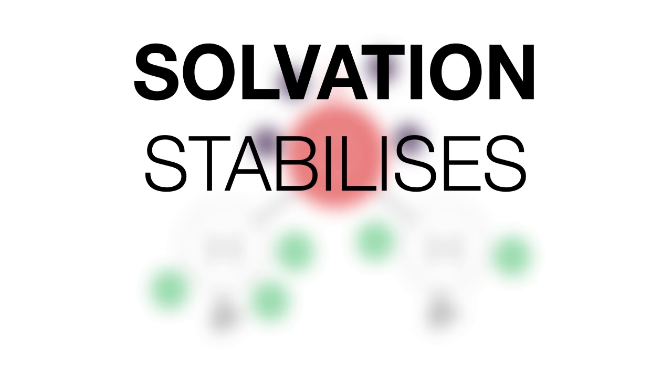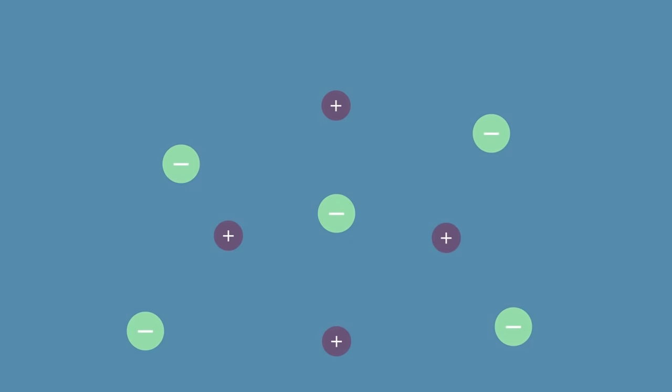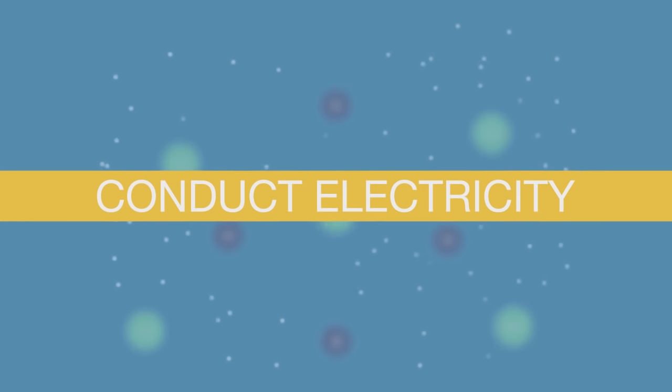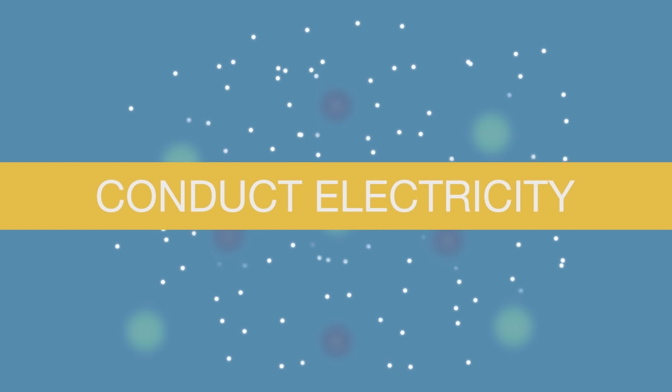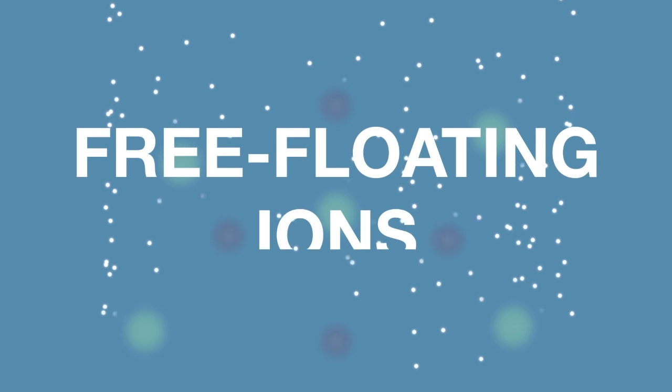This solvation stabilizes the free-floating ions. An ionic compound, dissolved in water, can conduct electricity. This is another key property of ionic compounds. This is made possible due to the presence of free-floating ions.